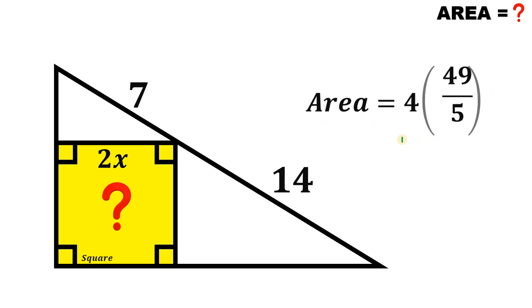So the area of the square equals 4 times 49 over 5. And 4 times 49 over 5 will give us 196 over 5. And this is the area of this yellow square.